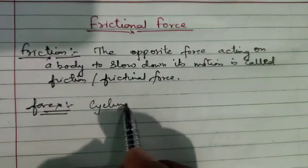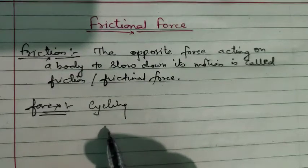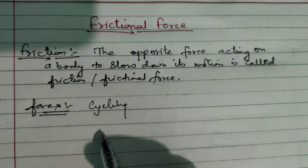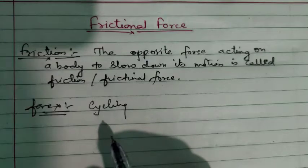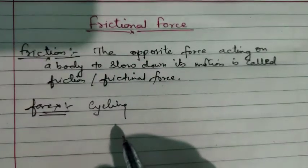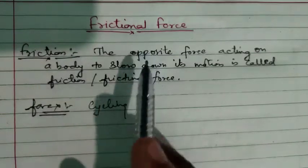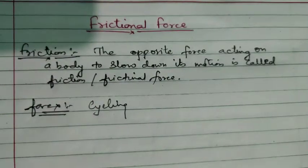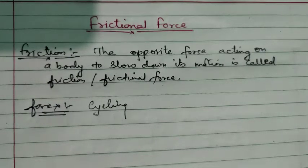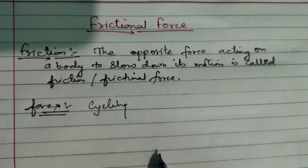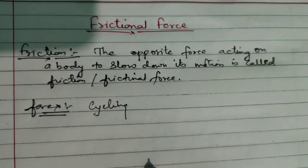Another example is cycling. When you are riding a cycle and you stop pedaling, the bicycle slowly comes to a stop. That means an opposite force is acting on the cycle to stop it — that opposite force is known as frictional force. Due to friction, we are also able to walk. If friction is not there in the environment, we will be unable to walk.